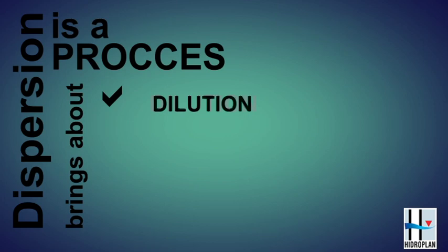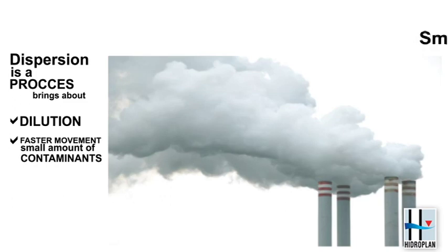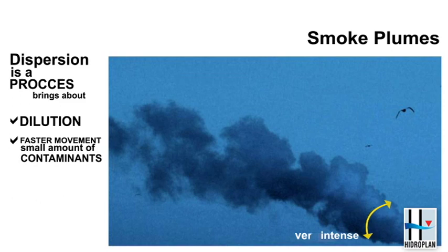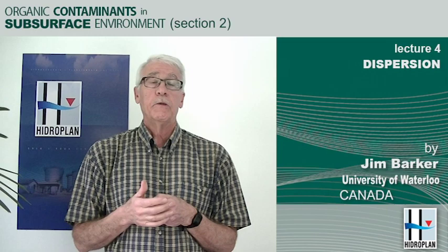Dispersion is a process that is good in that it brings about dilution. It's perhaps also hazardous in that it brings about a little bit faster movement of a small amount of the contaminants. We're aware of dispersion if we look at the smoke plumes that come out of chimneys. Near the chimney the smoke is very intense, but as the plume moves away it becomes less and less intense. The nature of the smoke breaks up into smaller packages and eventually it disappears — that's the process of dispersion.